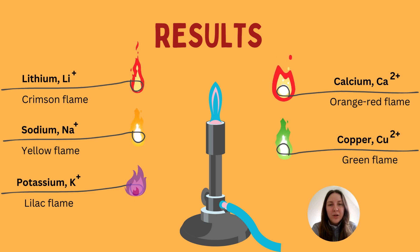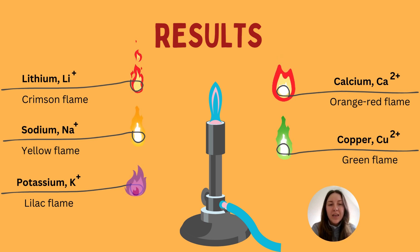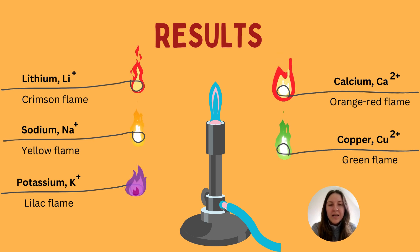Here are the different results you should see. Lithium forms a Li+ ion and produces a crimson flame. Calcium forms a Ca2+ ion — the two plus comes from donating two electrons — and produces an orangey-red flame. The copper ion is also 2+ as it donates two electrons, producing a green flame. Sodium is Na+ and produces a yellowish flame.